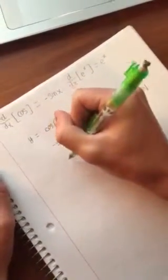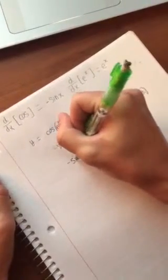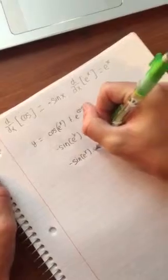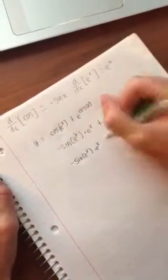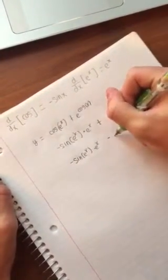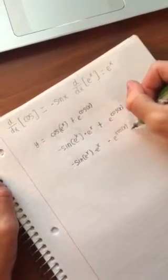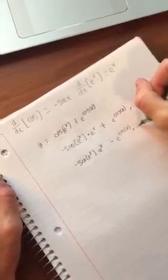So, here we'll rewrite it, our final problem. Negative sine of e to the x, times e to the x, minus e to the cosine of x, times sine x.